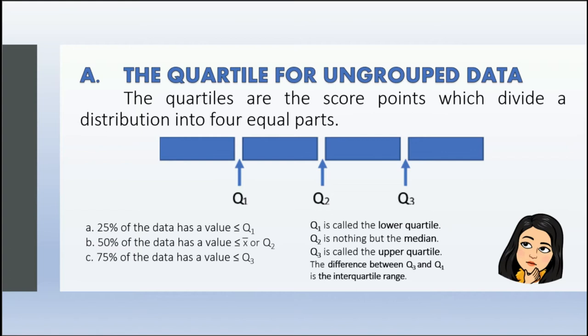Also, quartile 1 is considered the lower quartile. For quartile 2, since it is in the middle, we call it the median. Quartile 3 is called the upper quartile. And when we get the difference of Q3 and Q1, we call it the interquartile range.